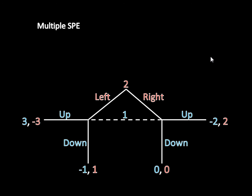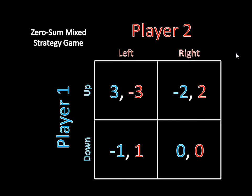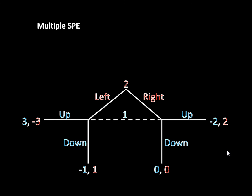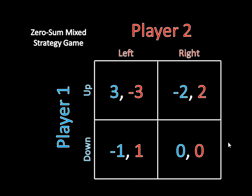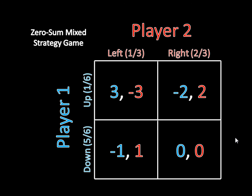We've actually seen this game before. If we take these moves and put them into a strategic form game, we get this — it's the zero-sum mixed strategy game we looked at back when we covered the mixed strategy algorithm. Player 2 still has moves left and right, Player 1 has moves up and down, and all the payoffs correspond to what we saw over here. The solution is: Player 1 goes up with probability 1/6, down with probability 5/6, and Player 2 goes left with probability 1/3 and right with probability 2/3 — that's the unique Nash equilibrium of this game.